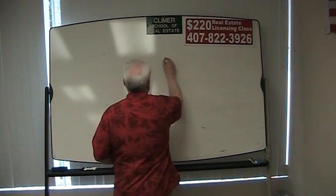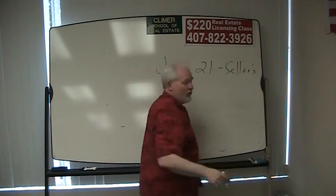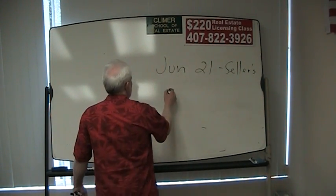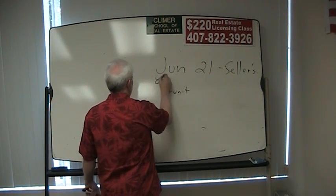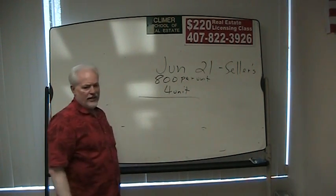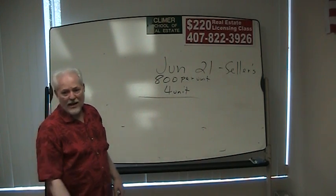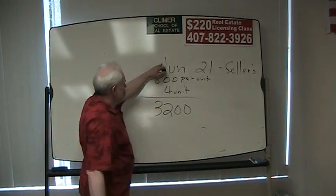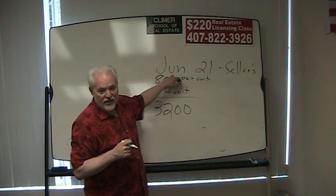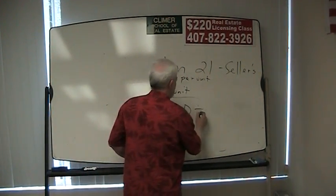So let's say we had a closing on June 21st, which is the seller's day — and it's the seller's day only because it says so in the test question. So we're going to close on June 25th. This is a four-unit building that rents for $800 per unit. What's the monthly rent? 800 times four — so on the first of June, Mr. Seller collected $3,200.